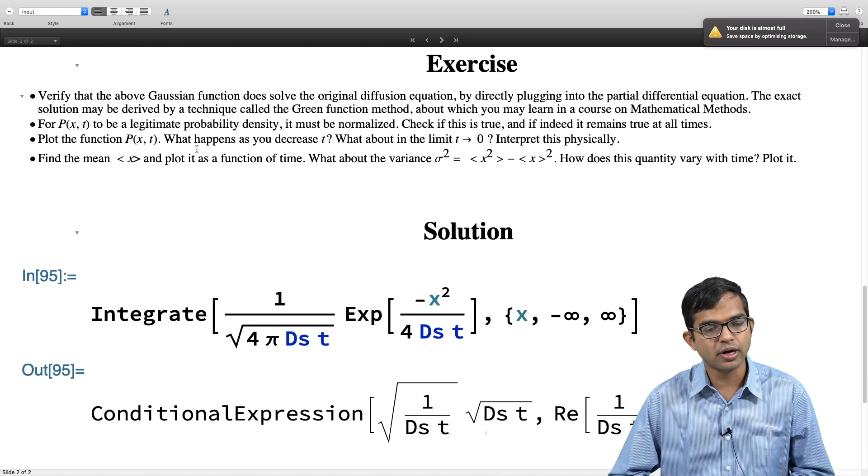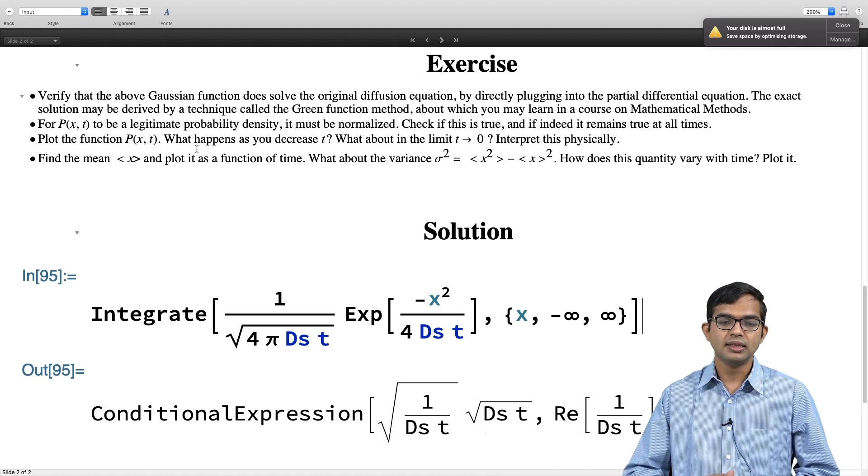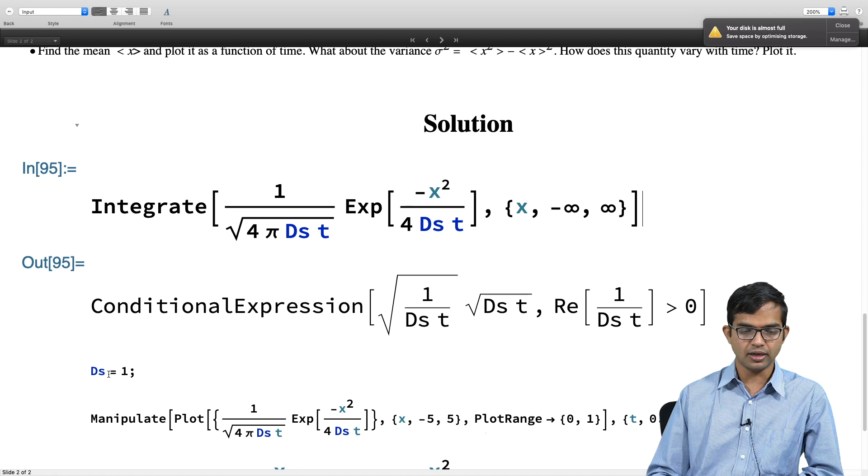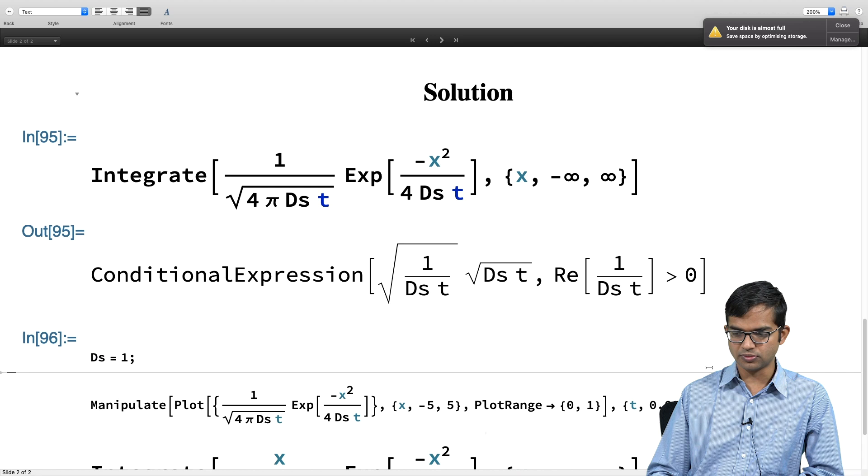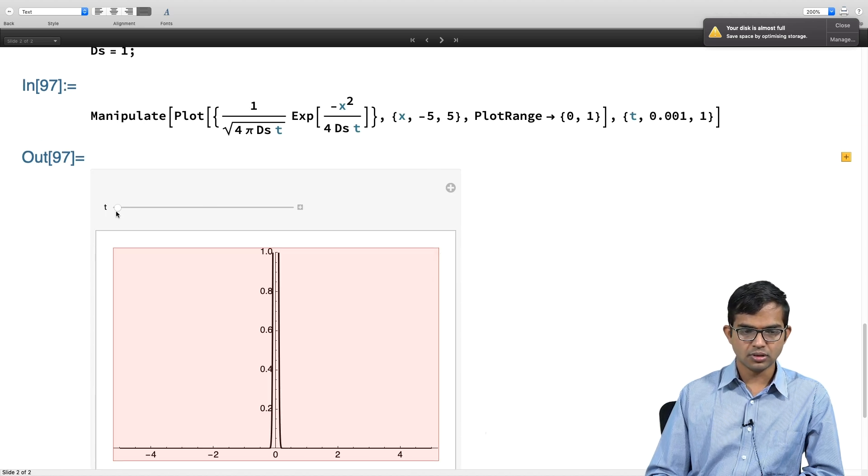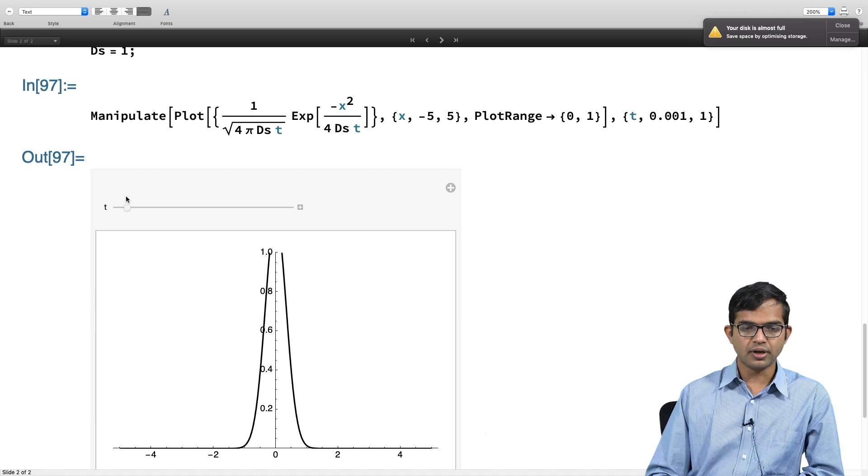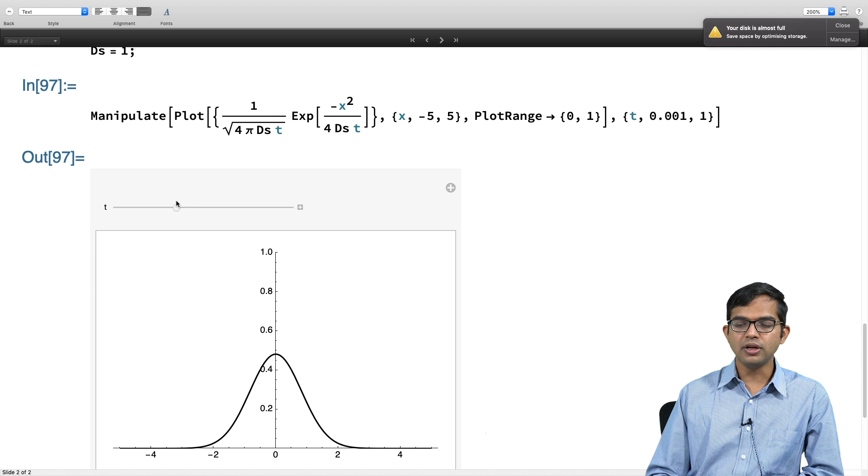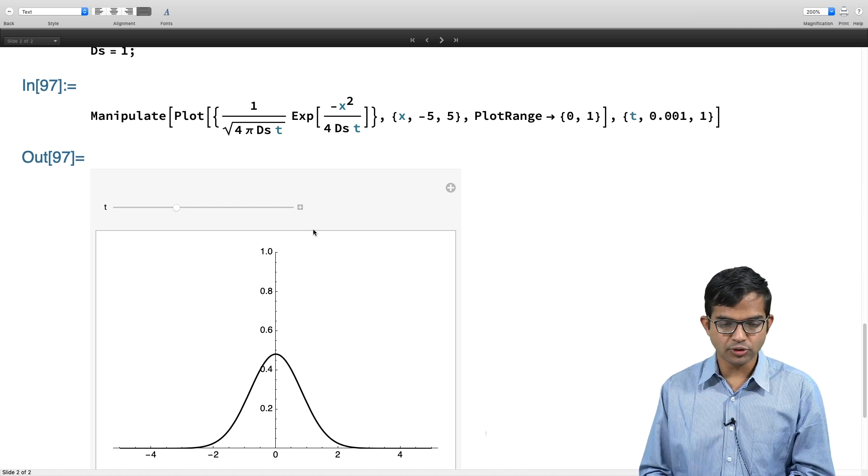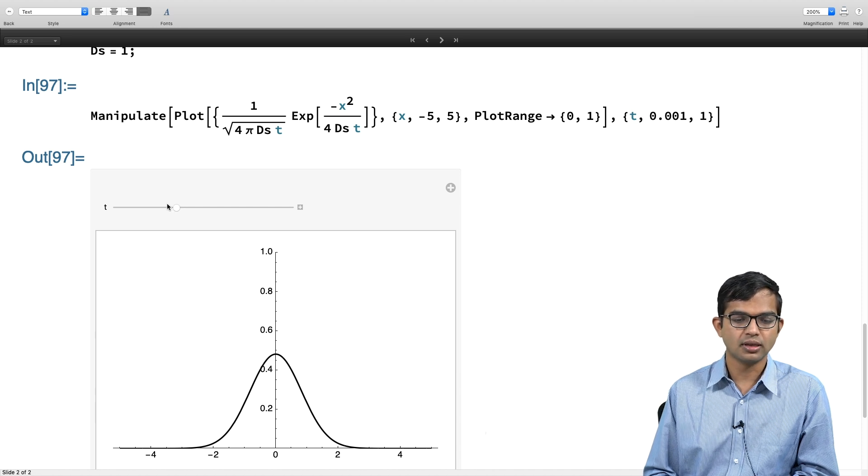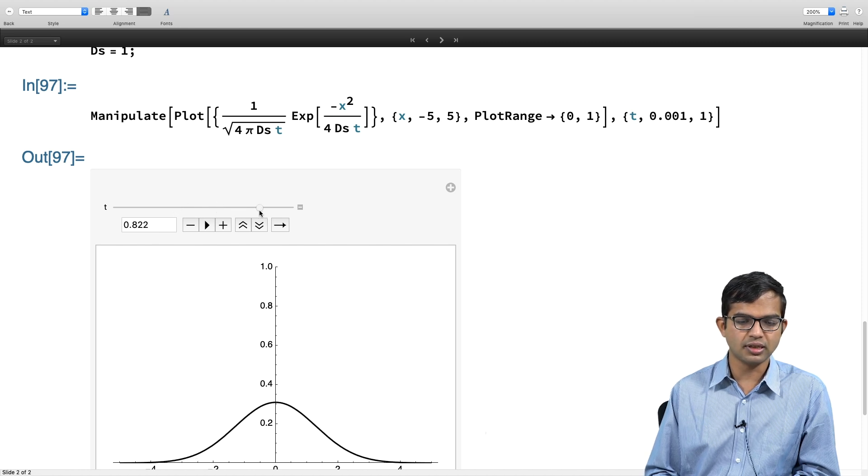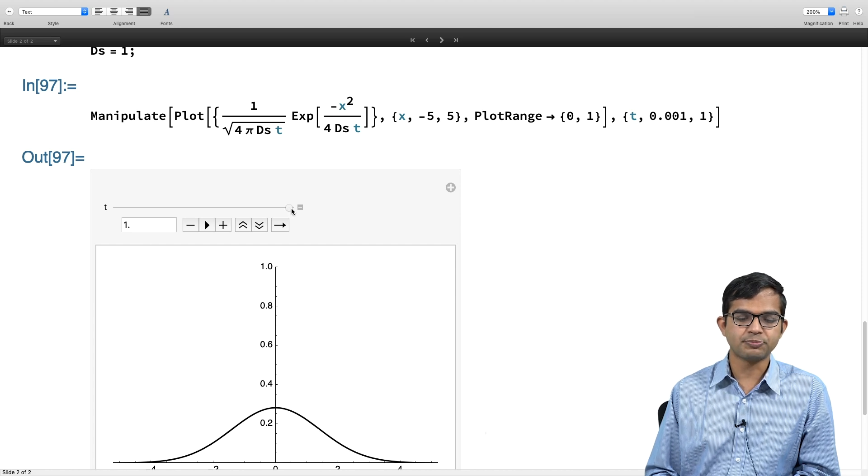Next what I want to do is, what about the nature of this function if I were to plot this? Is there some special form this takes? It is something that you already probably know and this is what is called a Gaussian. Let me do that. I am going to choose ds to be 1 for the purposes of this exploration, and then I will use the manipulate command to allow t to go from 0.001 all the way up to 1. If I put t to be some relatively small number, like t equal to 0.3 for example or 0.5 or so on, you see that it is a Gaussian whose spread keeps expanding as a function of time.